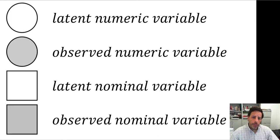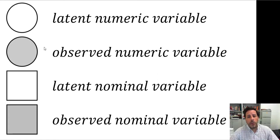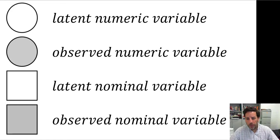We have four types of nodes: rounded and shaded, rounded unshaded, shaded squarish, and unshaded squarish. The round nodes, which could be circles or ovals, indicate that we're talking about numeric variables. The square nodes indicate nominal variables.